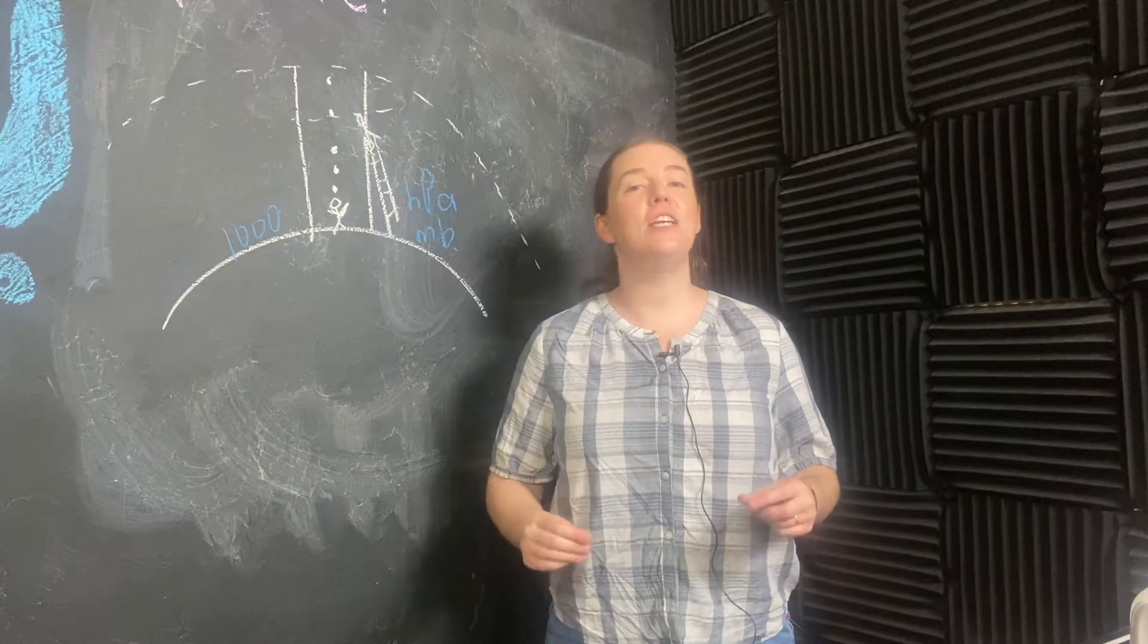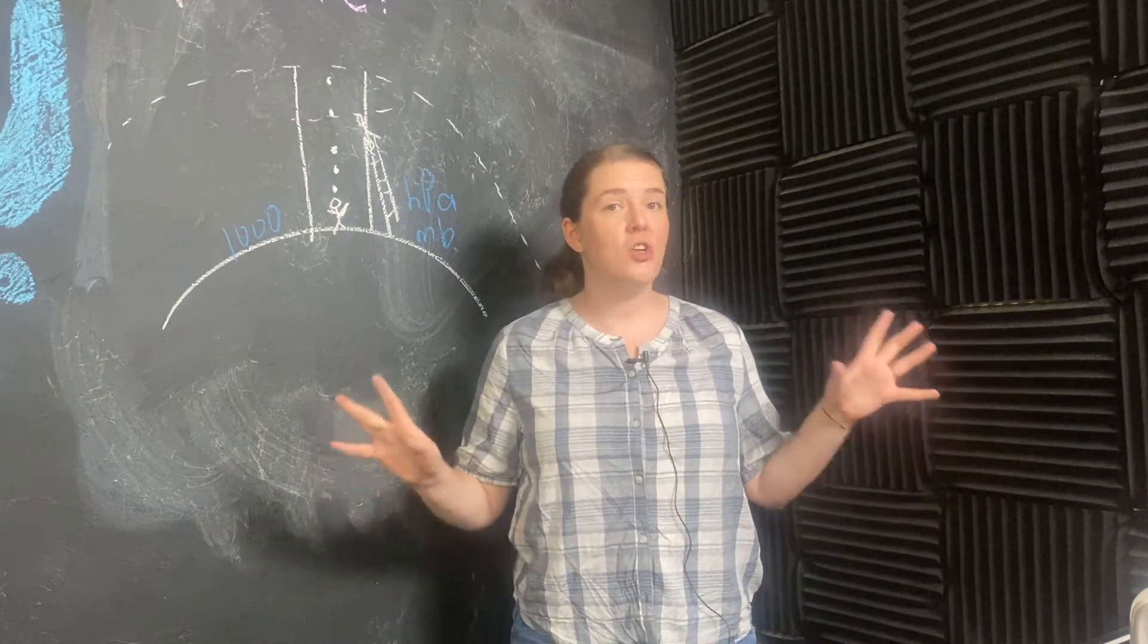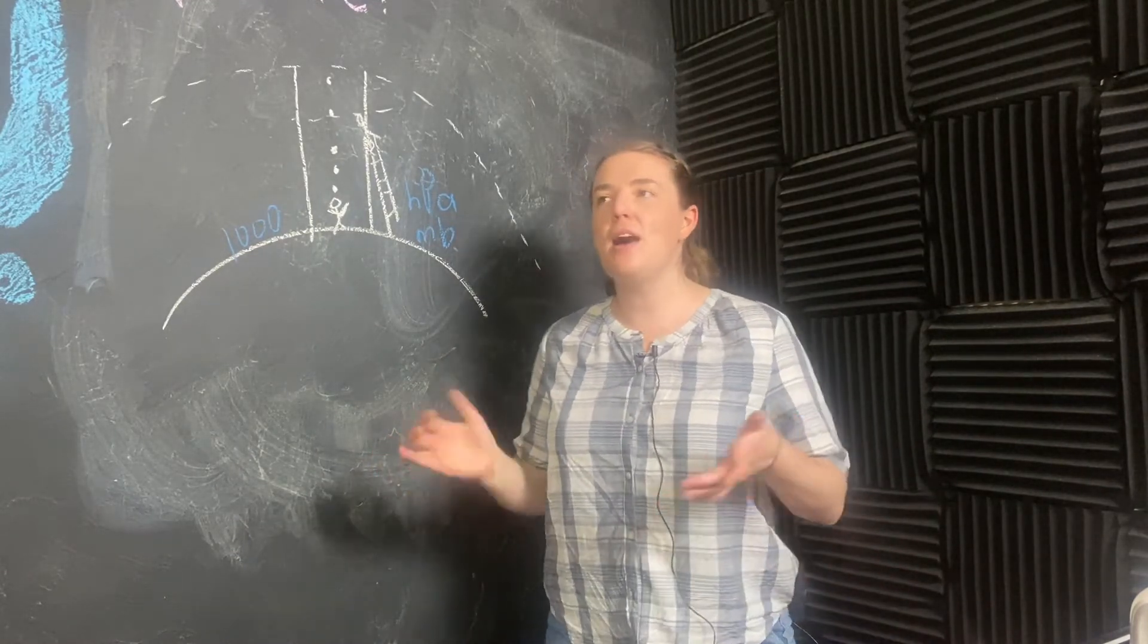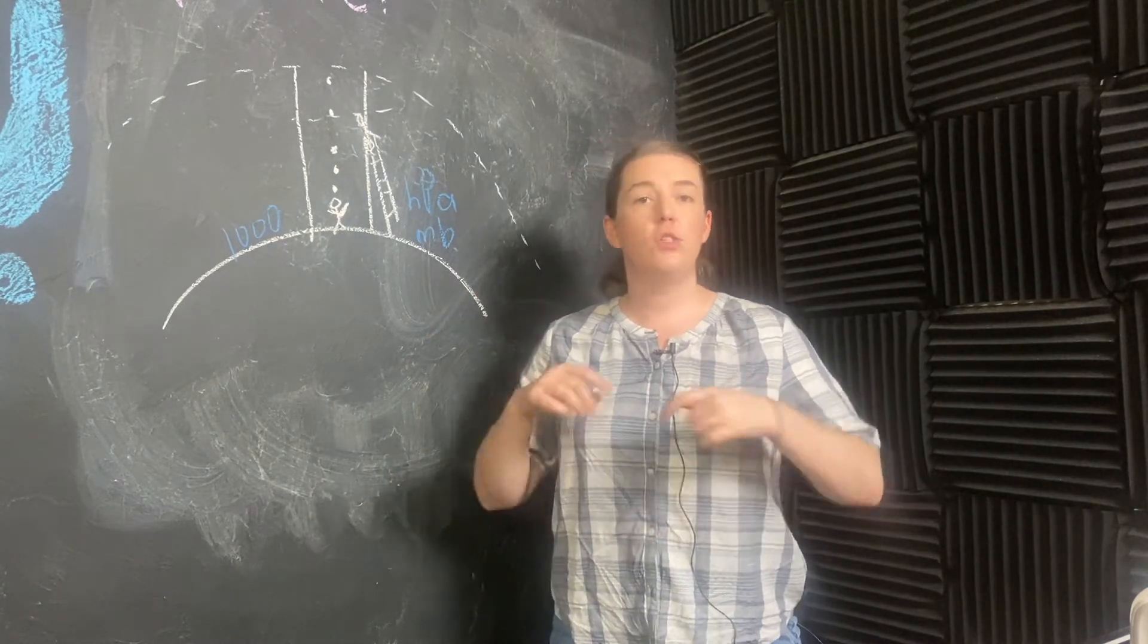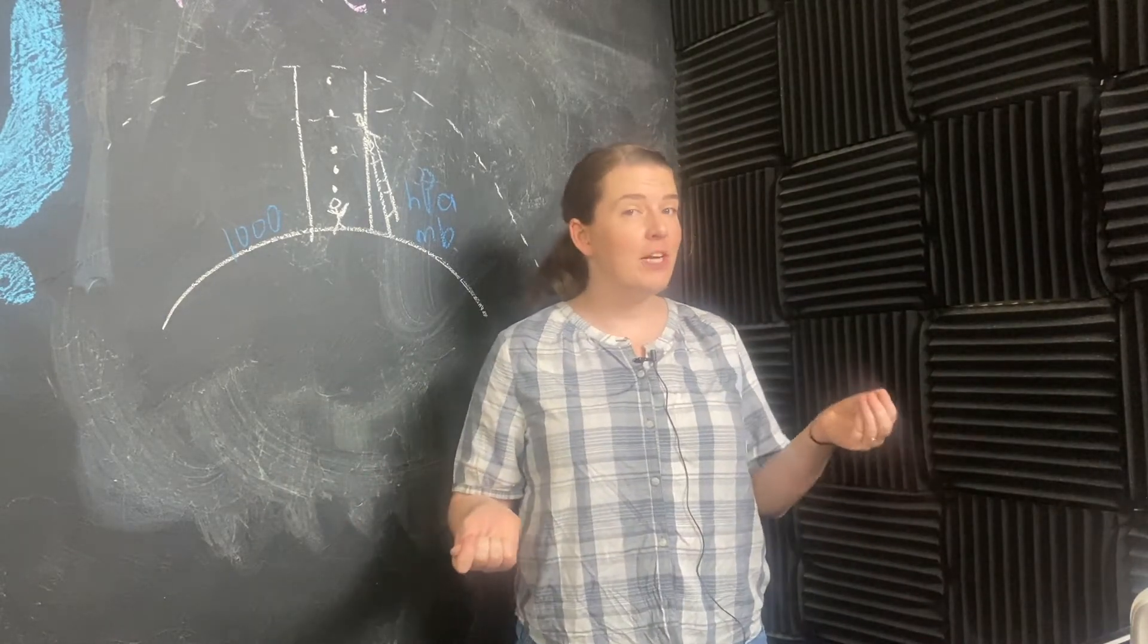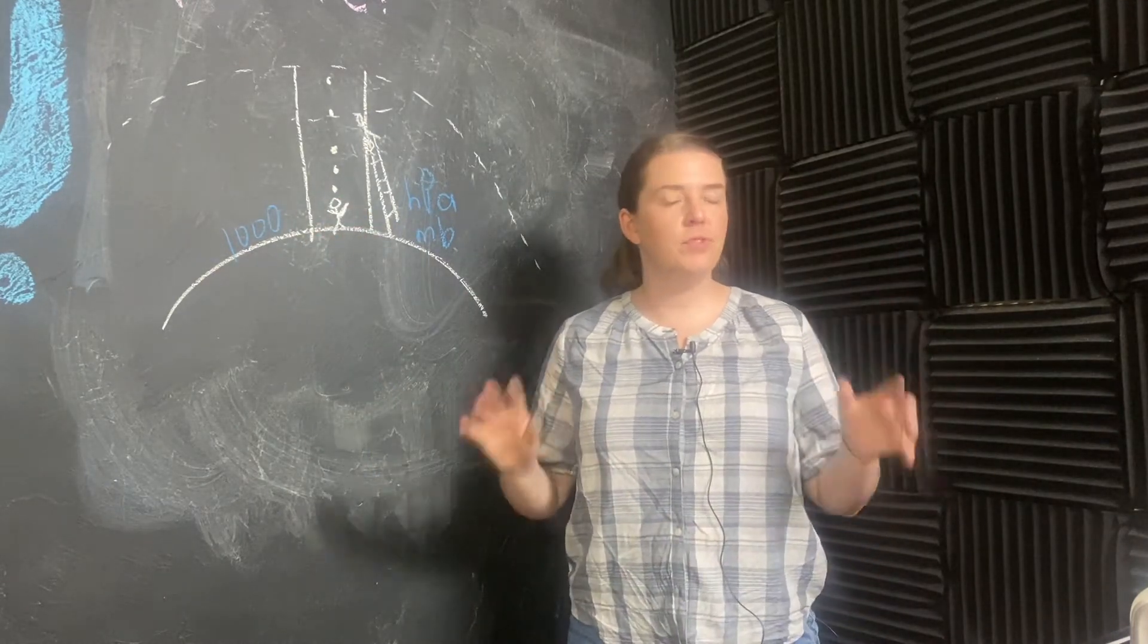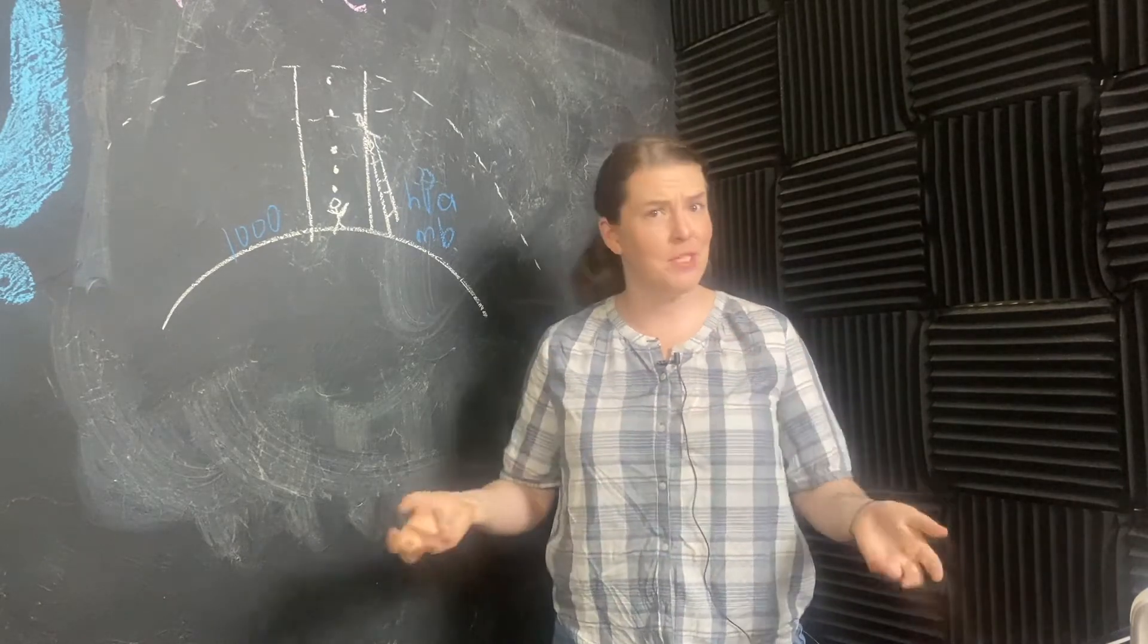At the beginning of this video, I told y'all that if all you knew about your location was the surface pressure and the temperature, you could still say a lot about the weather. Well, that's because low surface pressure is generally associated with stormy weather and rain, whereas high surface pressure is generally associated with sunny, clear skies. Let's take a brief look at why that is and how pressure drives atmospheric motion.